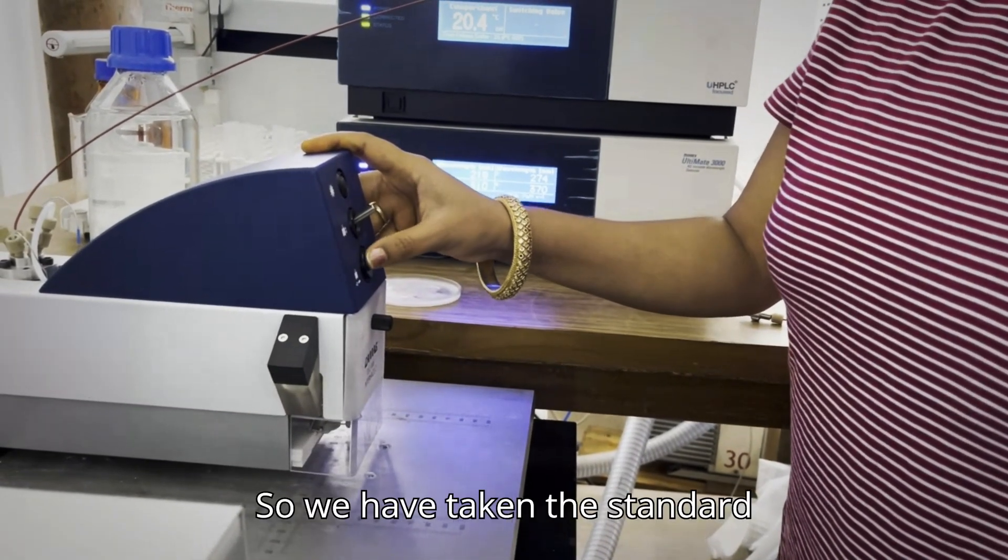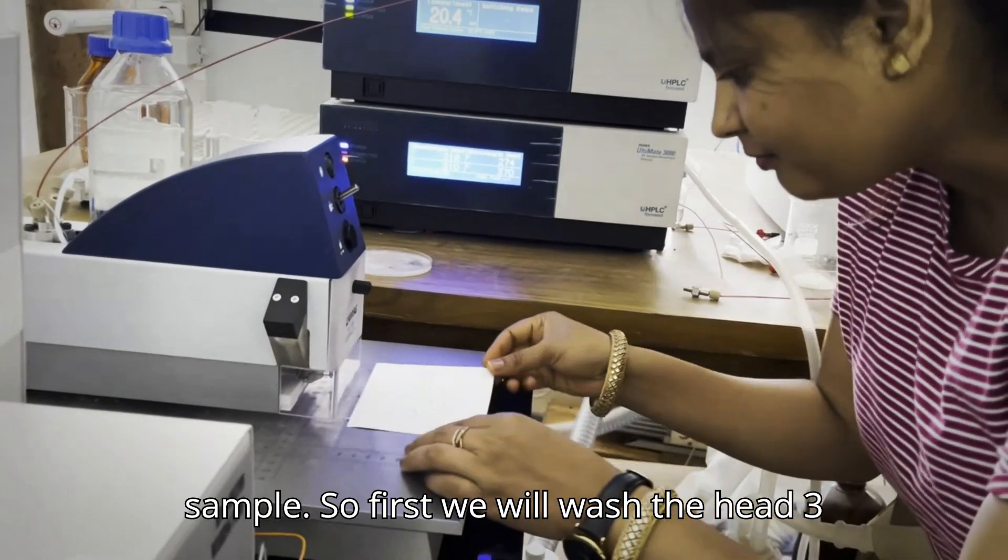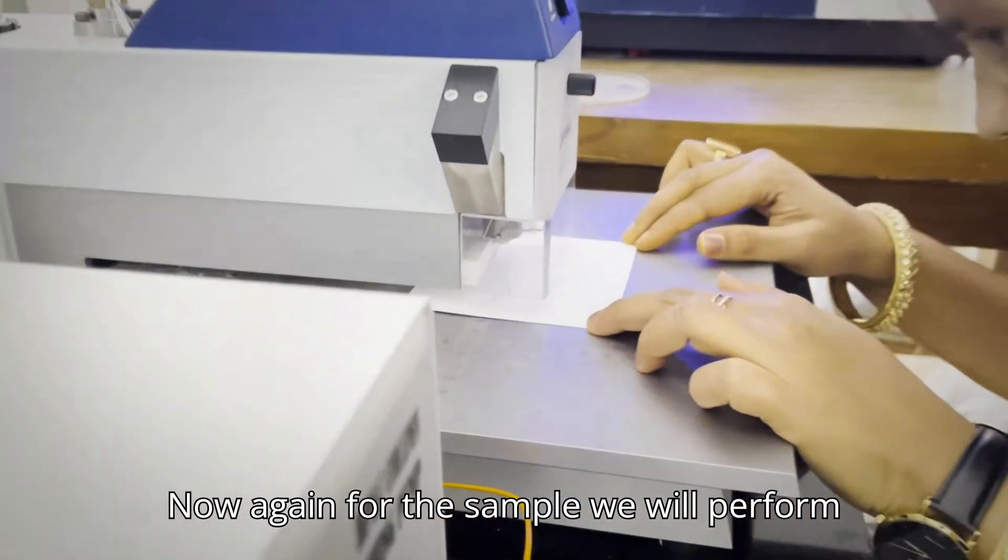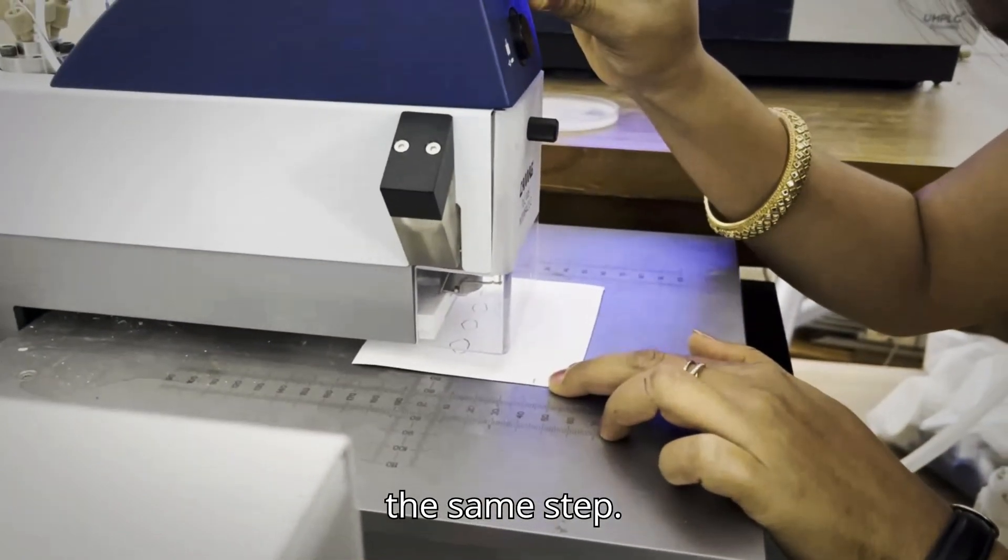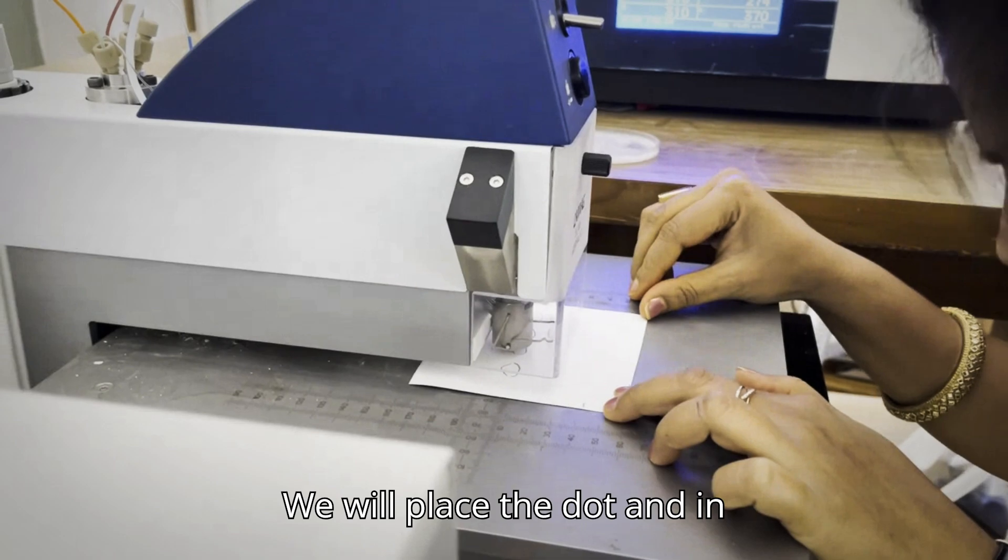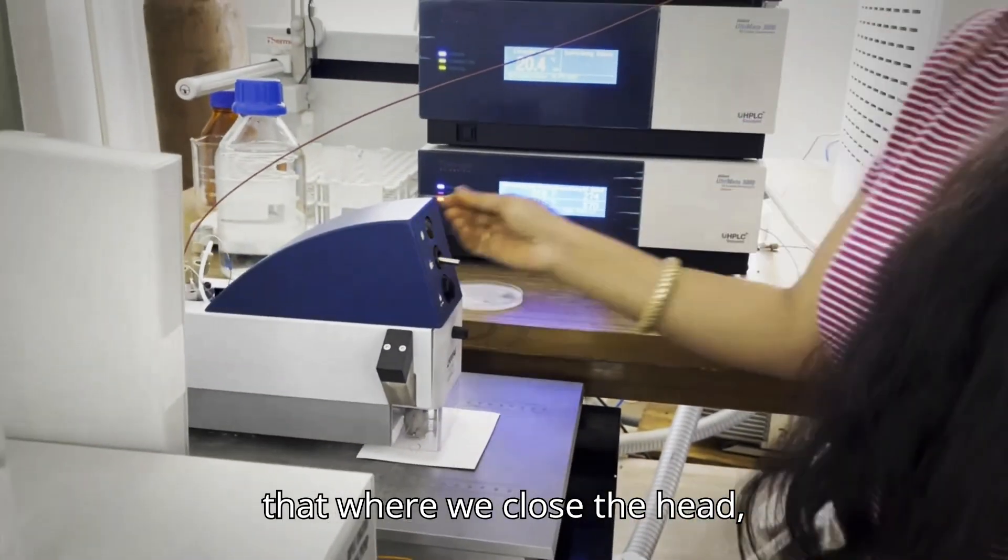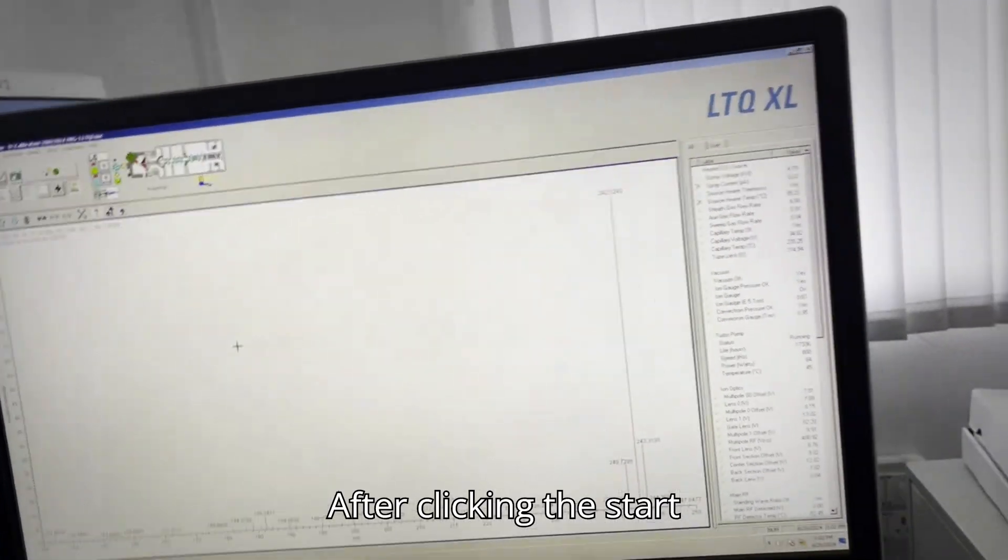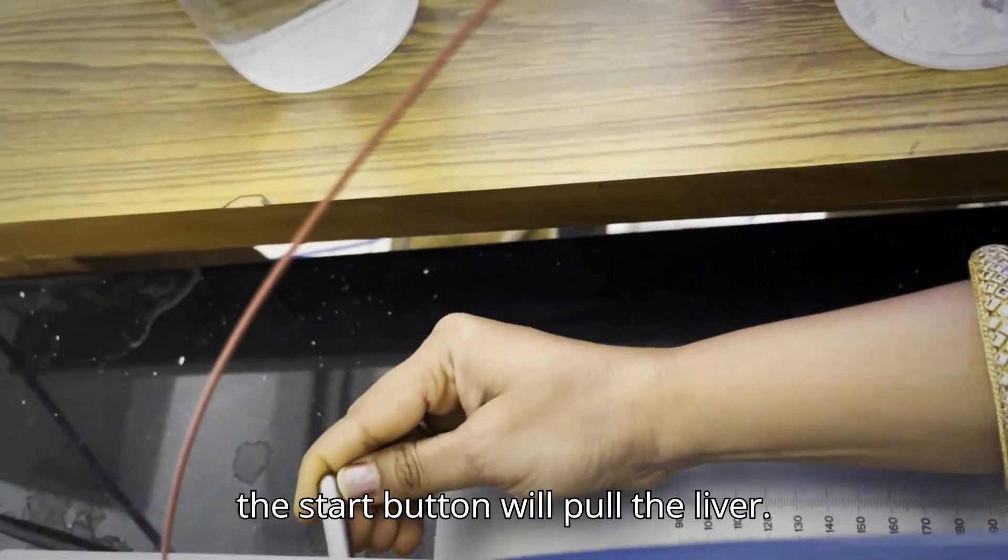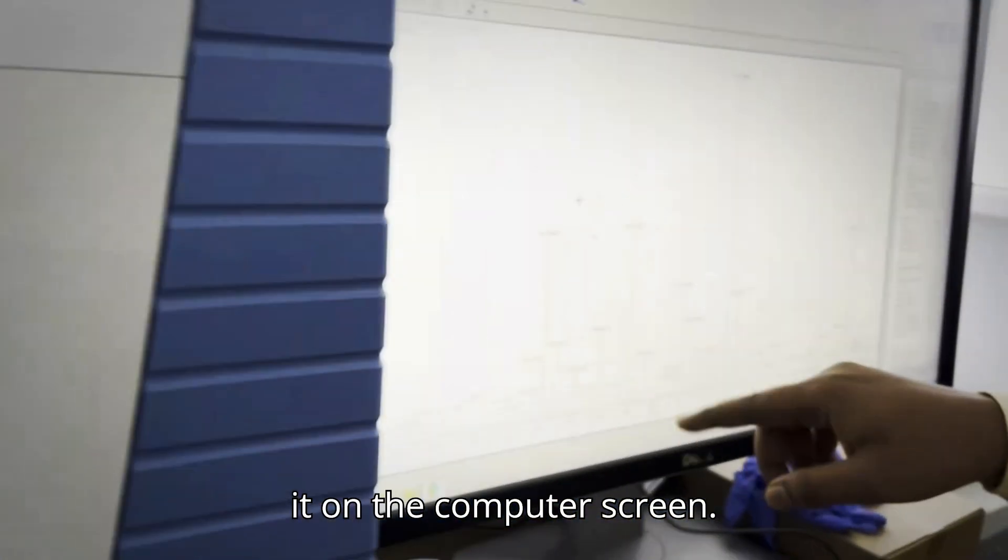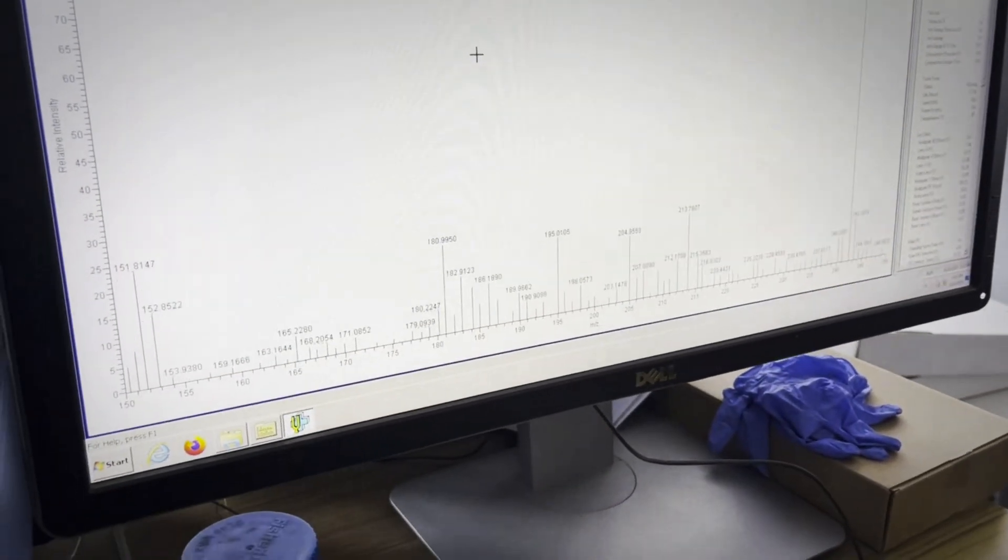We have taken the standard before. Now we are going to take the sample. First we will wash the head three times. Again for the sample, we will perform the same step. We will place the dot and then we close the head. We will click on the start button. After clicking the start button, we will pull the lever. And then you can analyze it on the computer screen, the peak.